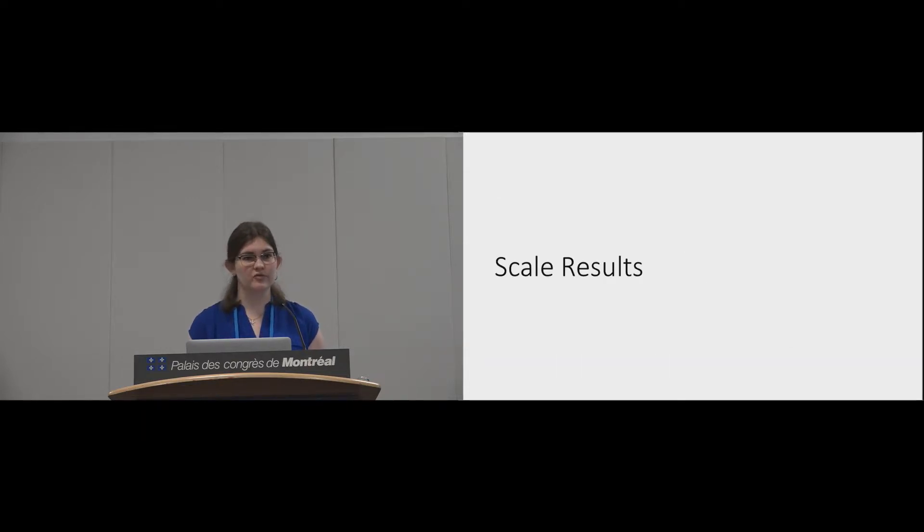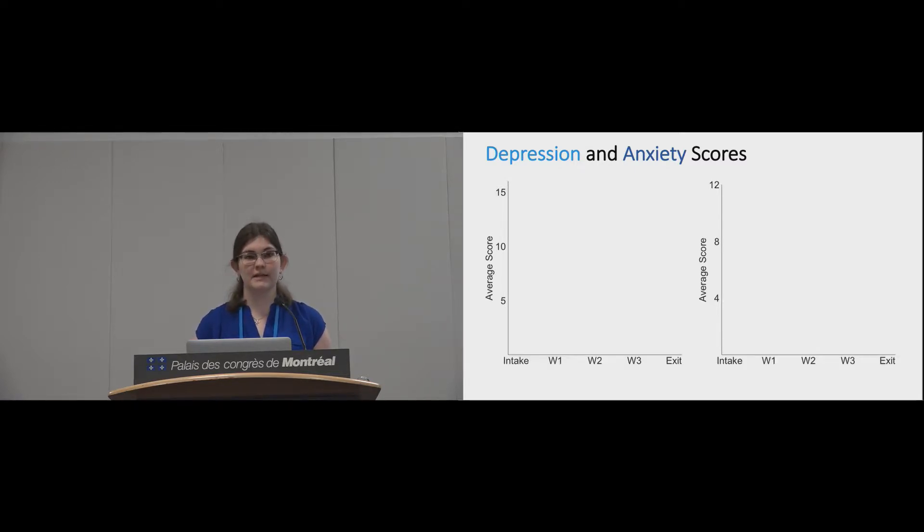I'm first going to talk about the most important results from the scales participants took throughout the study. We fully described the statistics in the paper, but we used hierarchical linear modeling to analyze the data. To visualize the results, we put the average scale score on the y-axis and the week the survey was taken on the x-axis. We also indicate the clinically significant thresholds for the scales, so for these lower numbers indicate less severe symptoms.